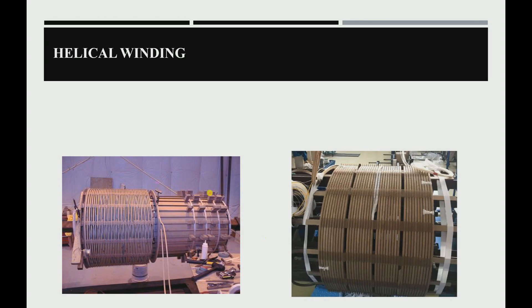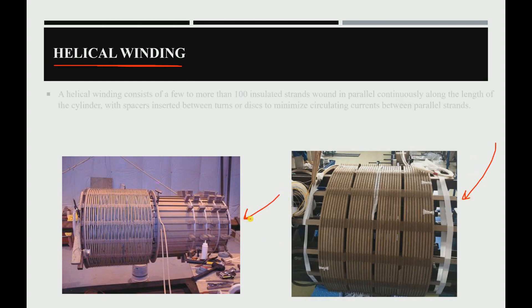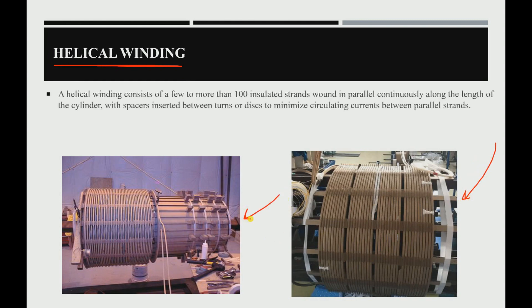The first type is the helical winding, which you can see in this figure. The helical winding consists of a few to more than a hundred insulated strands wound in parallel along the length of the cylinder, with spaces inserted between the turns or disks to minimize